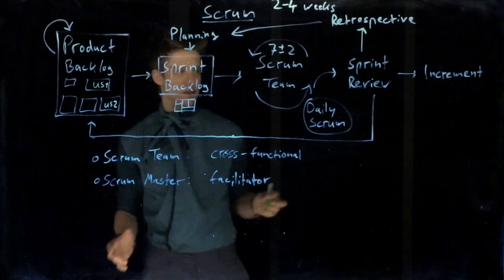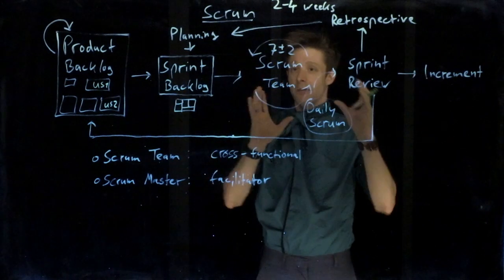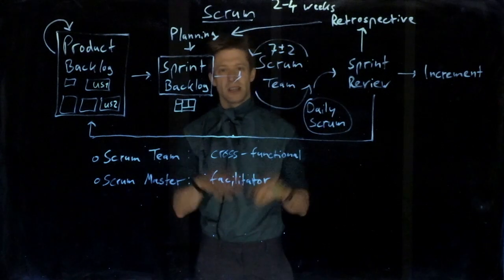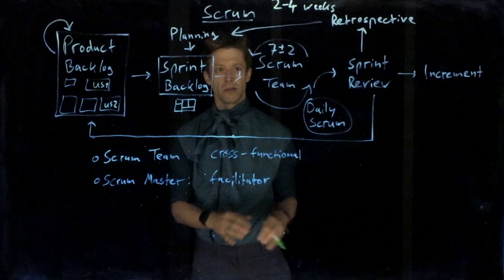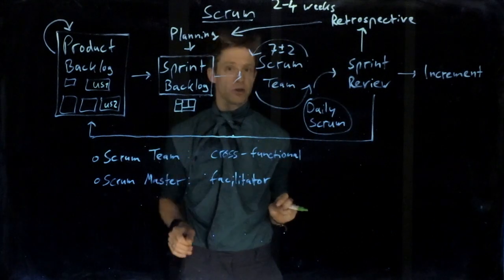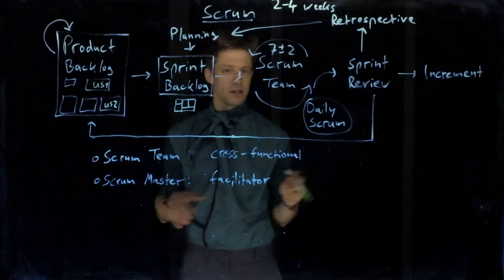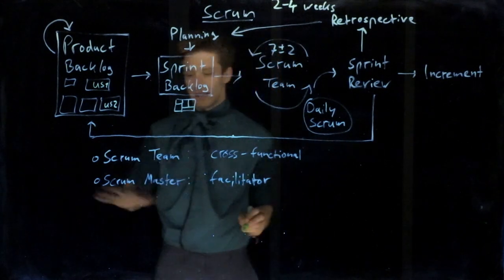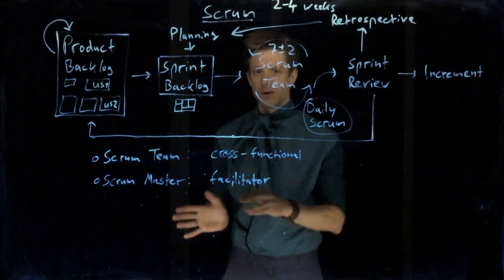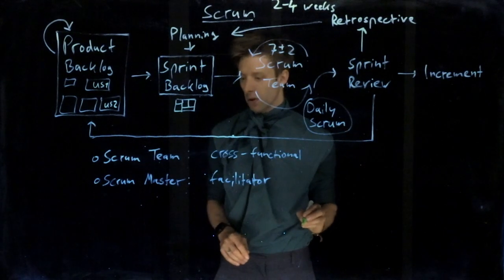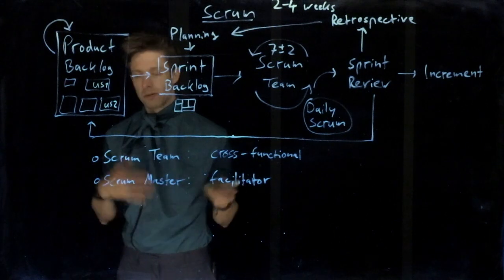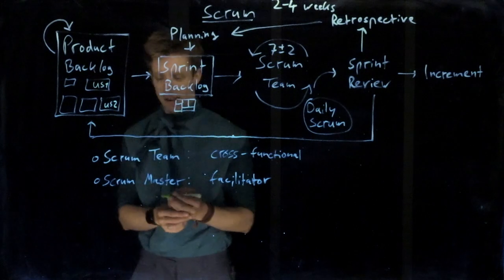The other thing the scrum master does is communicate with the outside world and, more importantly, protect the team from the outside world. If someone comes and wants to assign the team something or wants them to do something else, it's the scrum master's role to say, no, we are working on this user story right now, and we're in the middle of the sprint, so the team is not going to do something. That's basically the scrum master. Process improvement, reminding the team what they should be doing, and protecting the team from the outside world. But the scrum master is a team member as well, so he or she is also programming, testing, just like the others.